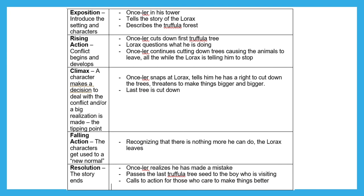That continues to build — he keeps cutting down trees, causing the animals to leave, and throughout that the Lorax keeps saying please stop. We can also see the Onceler getting frustrated with the Lorax. We reach the climax once the Onceler snaps at the Lorax, tells him he has a right to cut down the trees, and threatens to make things bigger and bigger. Then the last tree is cut down, leading to the falling action where the Lorax leaves. In the resolution, the Onceler realizes his mistake, passes the Truffula seed to the boy, and Dr. Seuss leaves us with a call to action.